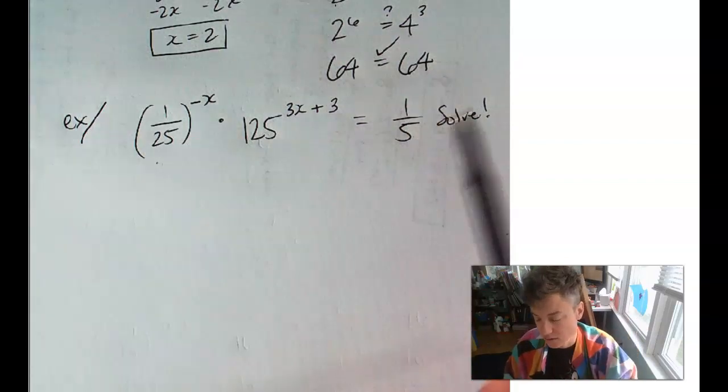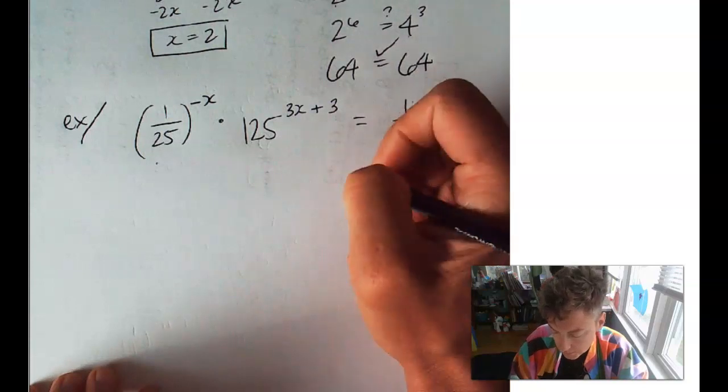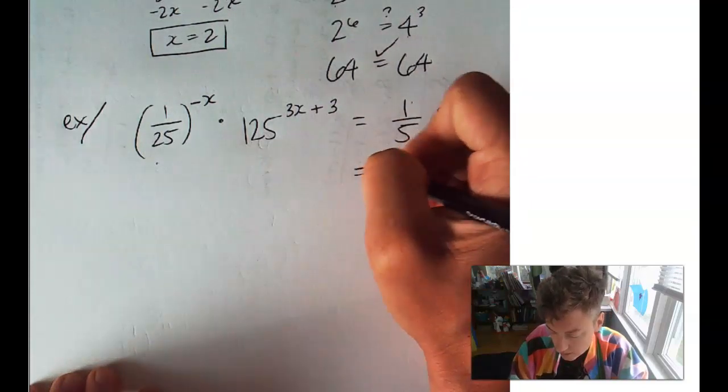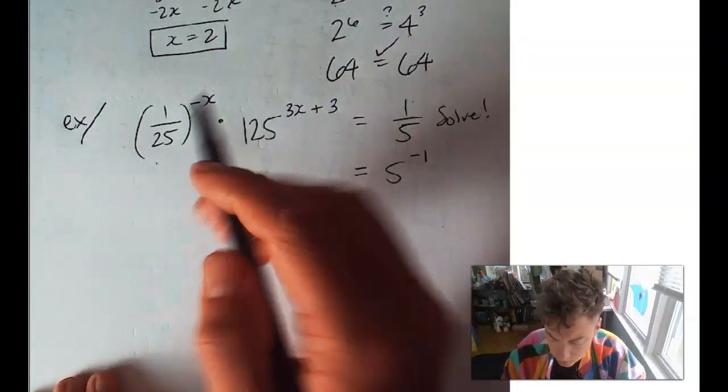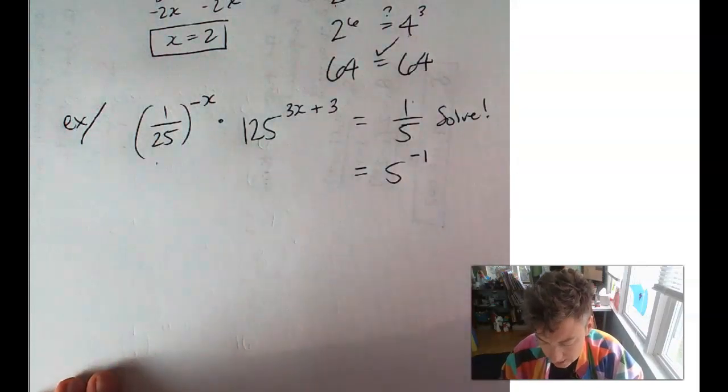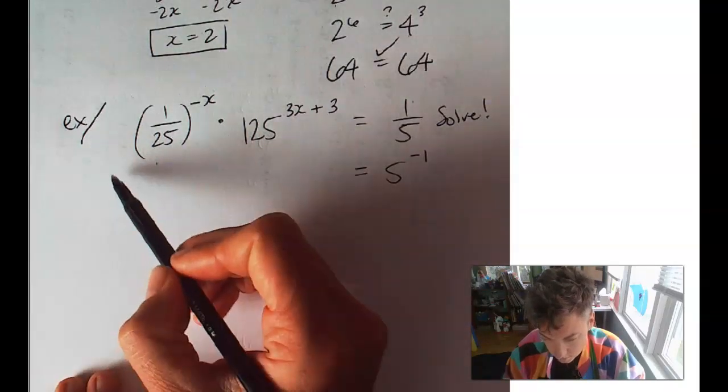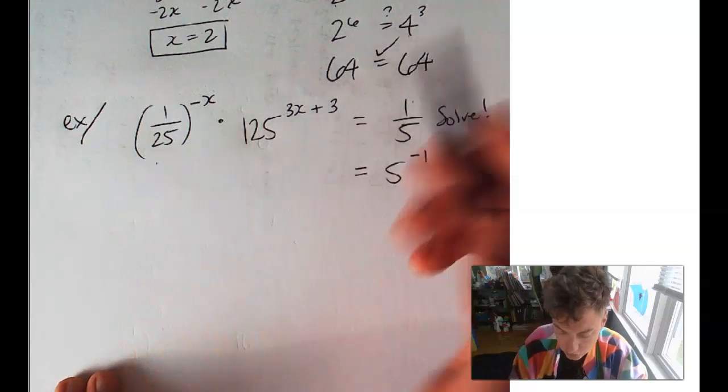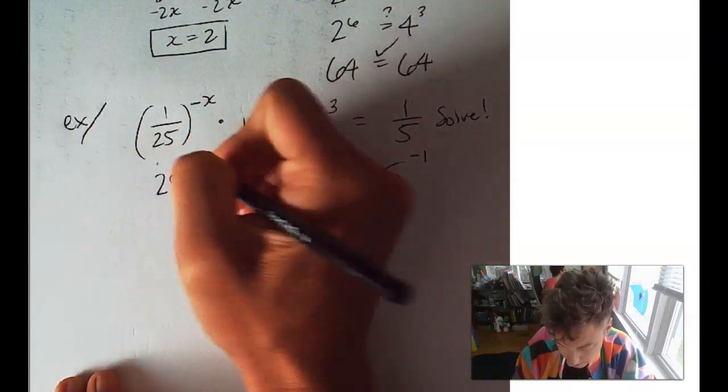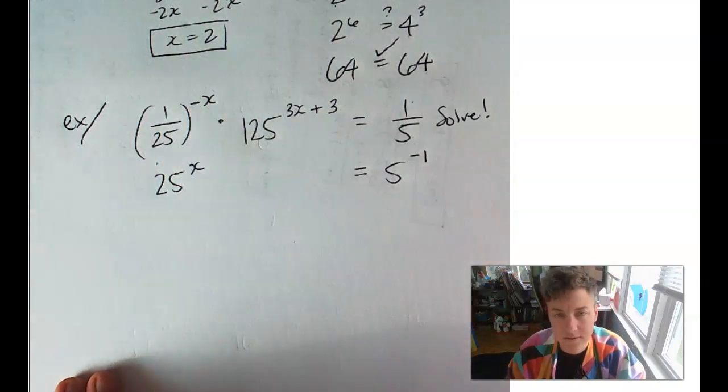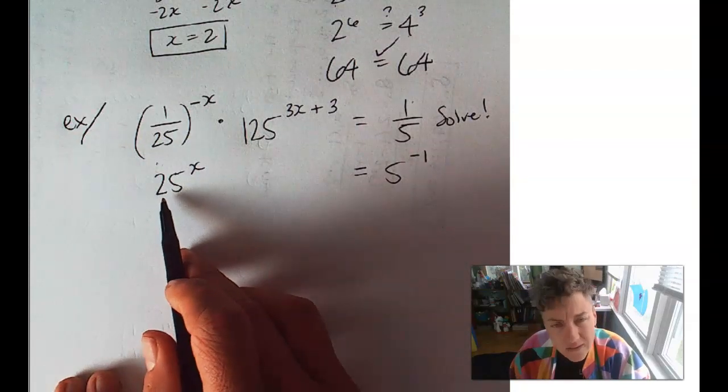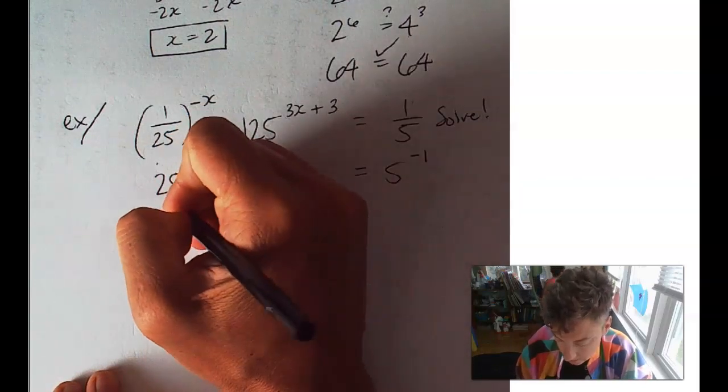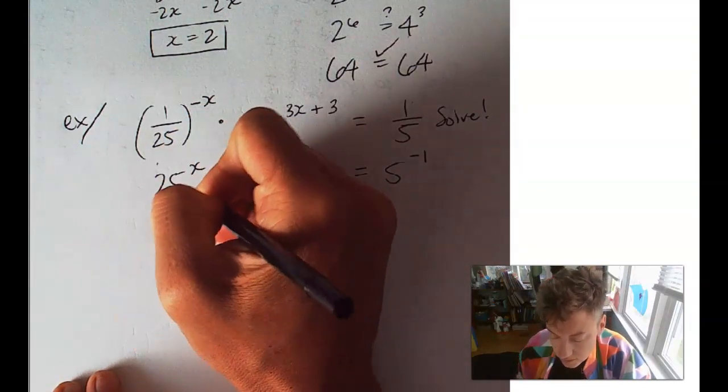5, dudes. We're going to use a 5. So, 1/5 is 5 to the negative 1. 1/25 to the negative x is 1 over 1/25 to the positive x, which is just 25 to the x. 25 to the positive x. Well, that's not in terms of 5 yet. But 25 could be written as 5 squared.